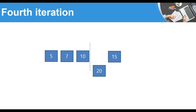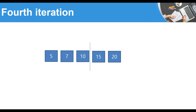In the fourth iteration we start with 20, ignoring the already-sorted left part. We compare 20 to 15 — 15 is less — so we swap and put the element back. Now the sorted part contains four elements, and there are no further elements to compare. The list is now fully sorted: 5, 7, 10, 15, and 20. That is how the selection sort algorithm works.